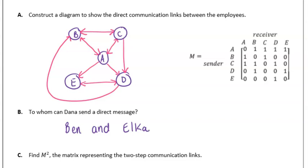Part C is asking us to find M squared, the matrix representing the two-step communication links. A two-step communication link means that Alka can speak to Ben by two steps: Alka can communicate with Dana and Dana can communicate with Ben. So whilst Alka can't directly communicate with Ben, she can get a message to Ben in two steps by Dana. If we go now and create that communication matrix for two steps, we are literally taking our one-step matrix and squaring it, and we are always doing that using our calculator.